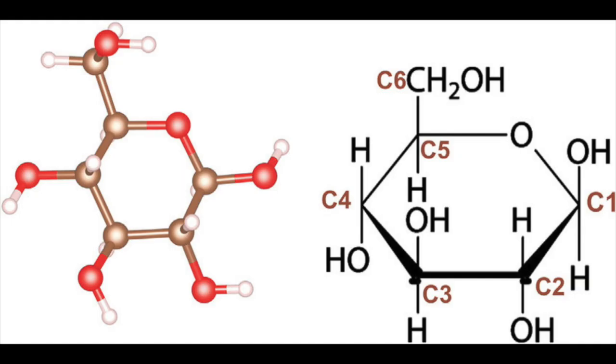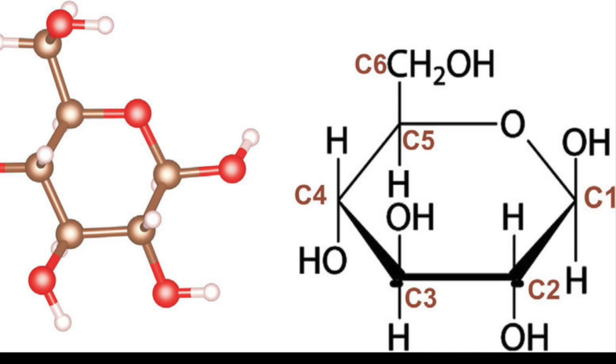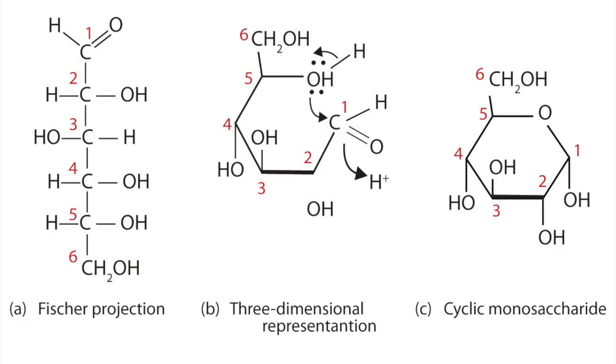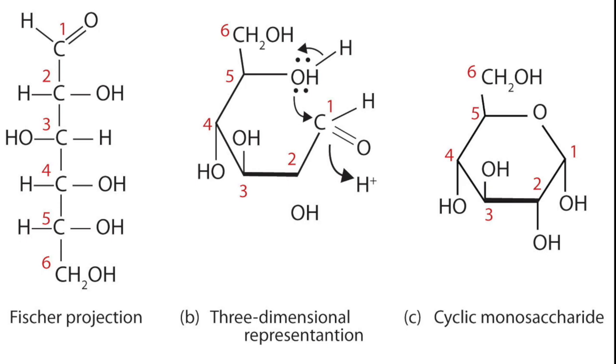Glucose has six carbons, C6H12O6. Glucose has four chiral carbons in its aldehyde form.